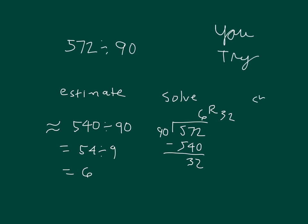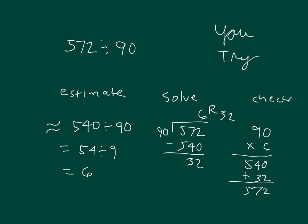So our remainder is 32. Here's our check: take 90, multiply it by 6. 6 times 0 is 0, 6 times 9 is 54, and we add back in the remainder of 32. That matches what we were dividing, so our check works.